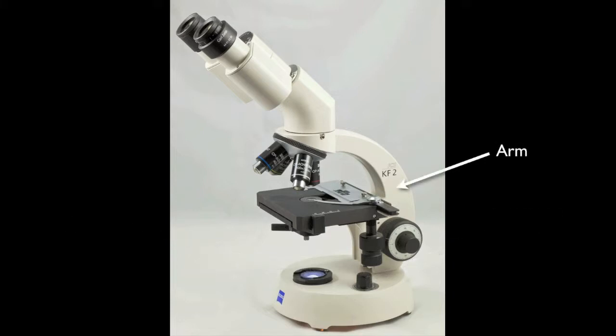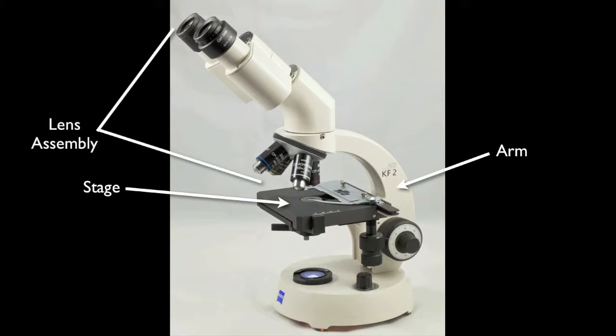The arm is attached to the base, and besides being where you grasp the microscope when carrying it, the arm holds the two major sub-assemblies of the microscope. The stage, where specimens are placed for viewing, and the lens assembly. Let's examine these two sub-assemblies in greater detail.